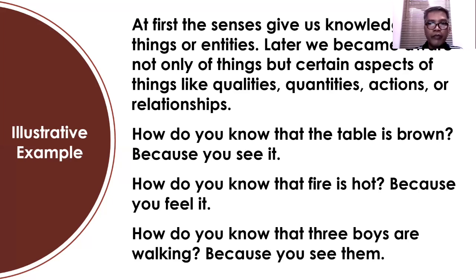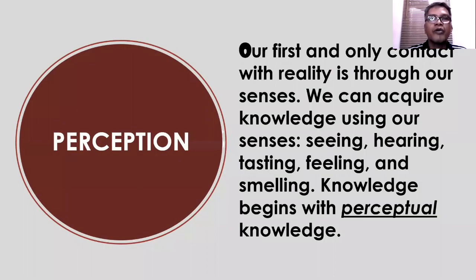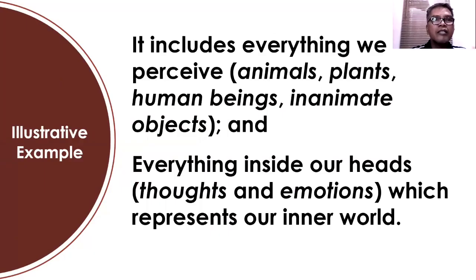For example, you cannot separate 'brown' from a 'brown table' — it's a brown table. You cannot separate the action 'walk' from persons who are walking. You cannot separate an attribute from the object because it is inherited from the object — that is its category. So that is what we call perception. We have first reality, then second perception.